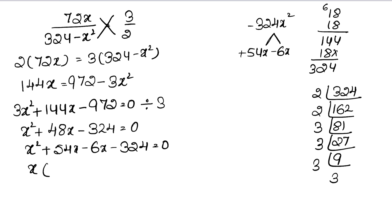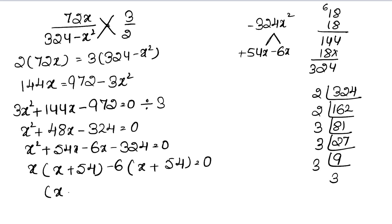Taking common factors: x is common from the first two terms giving x(x plus 54), and minus 6 is common from the last two terms giving minus 6(x plus 54). So the equation becomes (x plus 54)(x minus 6) equals 0.